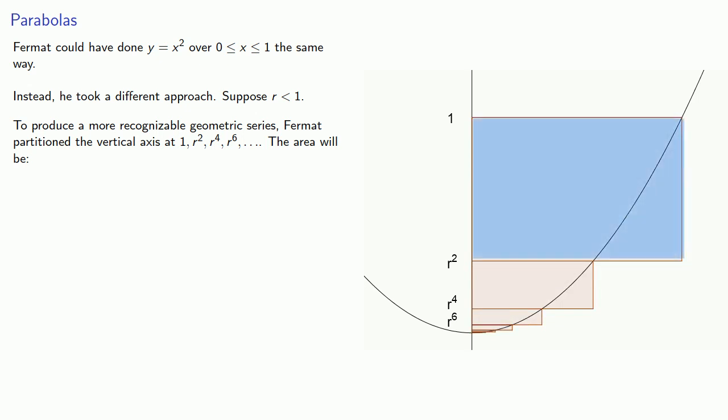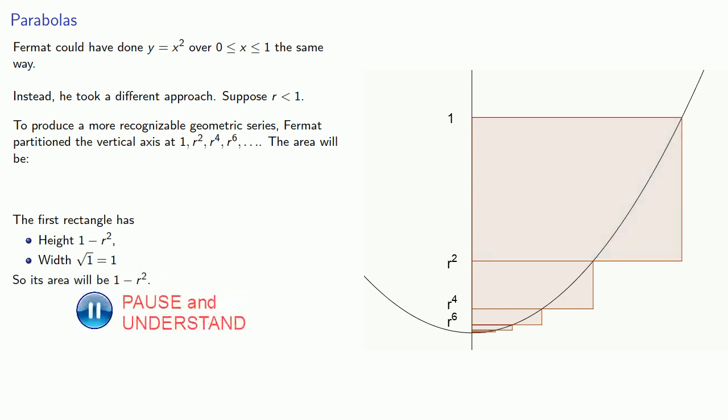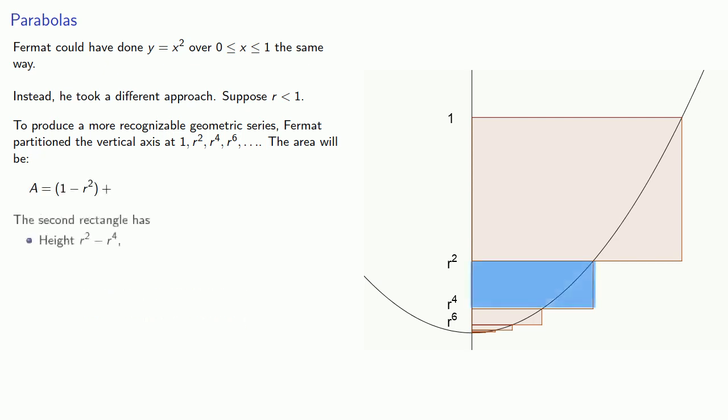The first rectangle has height 1 minus r squared with square root of 1, so its area will be 1 minus r squared. The second rectangle has height r squared minus r to the 4th, and the width will be the square root of r squared, or just r. So its area will be, which we can factor.